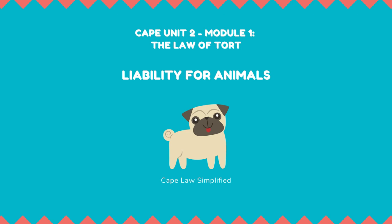Liability in negligence is the final of the four heads under which an owner of an animal may be liable for damage done under the common law. Quite apart from any liability in cattle trespass or under the scienter rule, the keeper of an animal owes a duty to take care that it does not become a source of harm to others. If an action in cattle trespass or under the scienter rule does not succeed, one in negligence may.